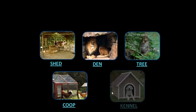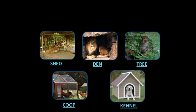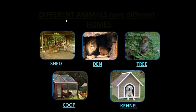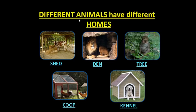This is the home of hen, and the name of the home is coop. Then, kennel is the home for dog. So from here, what did we notice? We notice that different animals have different homes.